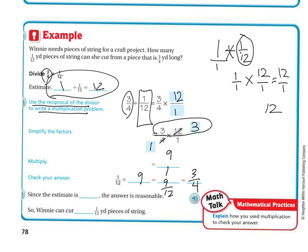Because since the estimate was 12, Winnie can cut nine one twelfths piece of string. It's reasonable because it's really close.